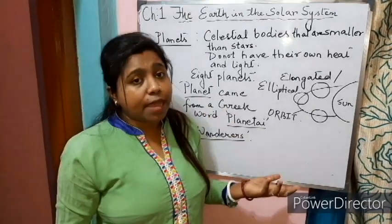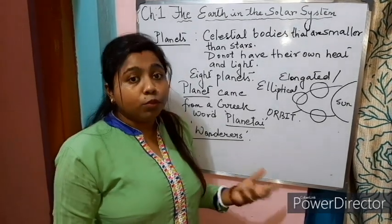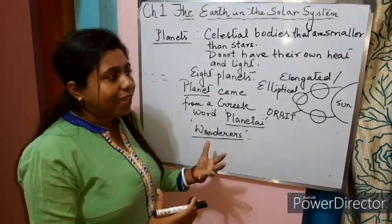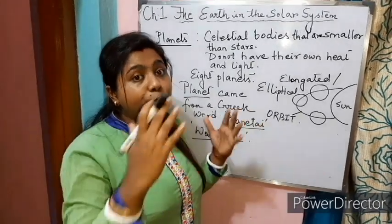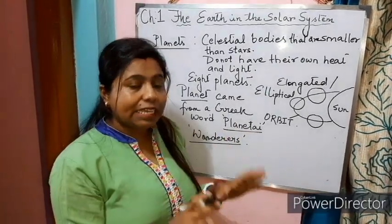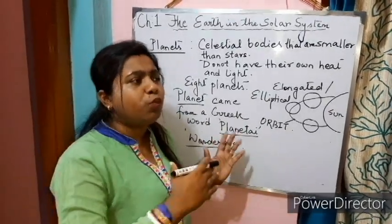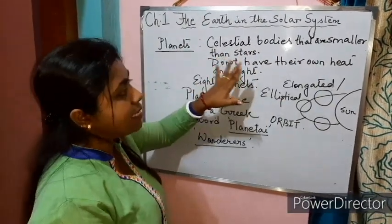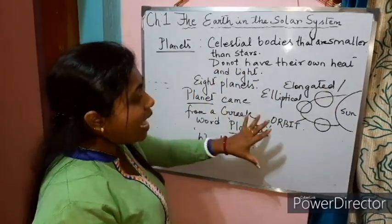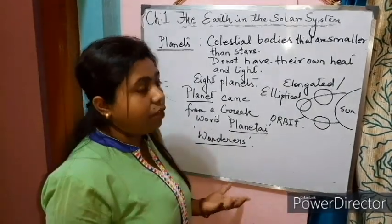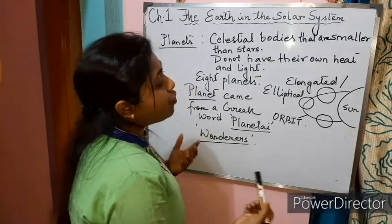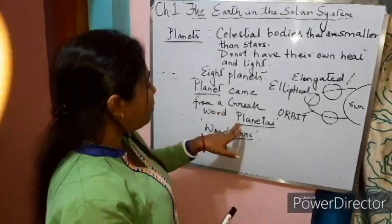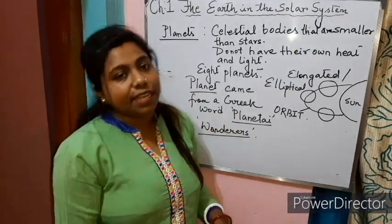Examples of planets include Earth, Mercury, Mars, Jupiter, Saturn, and Uranus — all are examples of planets. You will see that some planets are closer to the sun and some are very far away from the sun. To summarize: planets are celestial bodies smaller than stars, they do not have their own heat and light, they reflect the light of the nearest star, they revolve around the sun in an elliptical fixed path called an orbit, and there are eight planets in our solar system.